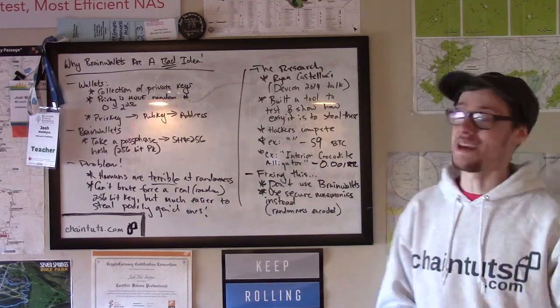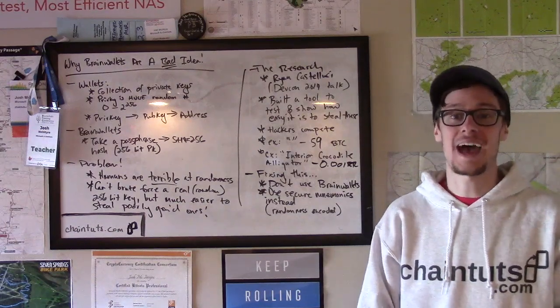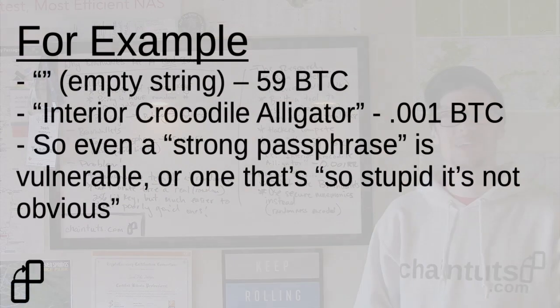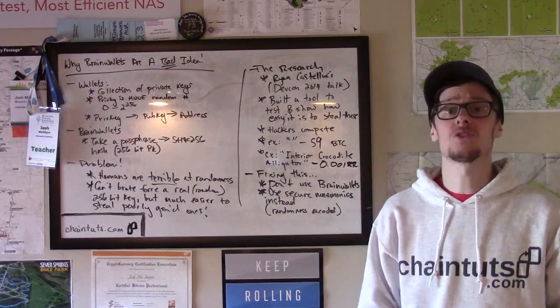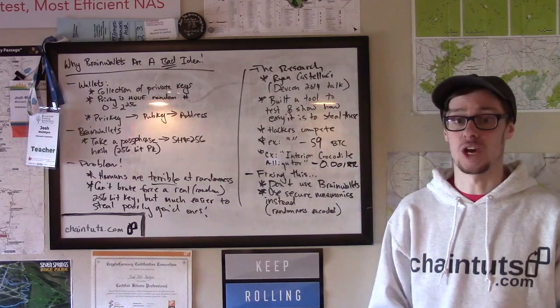For example, the empty string used as a brain wallet actually had over 59 Bitcoin in it that were subsequently stolen — a ton of money. Even a passphrase that might seem random or long enough to be secure in a password context can easily be cracked by a brain wallet tool and have all the Bitcoin stolen. 'One interior crocodile alligator' had 0.001 Bitcoin stolen from it over time. You as a human being are simply not a good enough source of randomness to generate your own private keys.